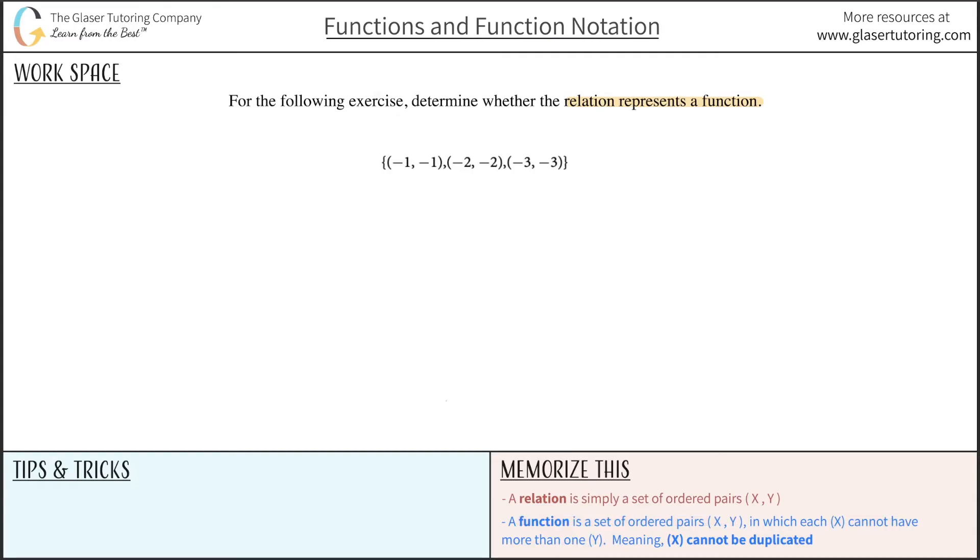What you're looking to do is identify the x values. Here's an x value, here's an x value, here's an x value. Remember, ordered pairs are always written x comma y. All we need to do is identify whether these three x values are repeated or not. Are they duplicated? No, they're not. So if they're not duplicated, this set of ordered pairs, this relation, is indeed a function.